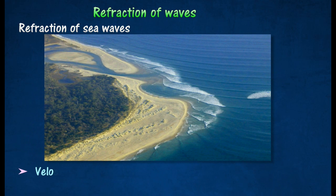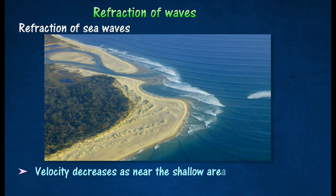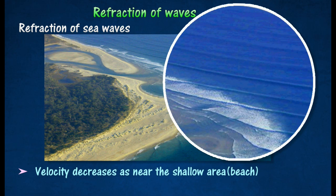For example, sea waves approach shallow water near the beach with decreasing velocity. This can be seen when the wave fronts become closer and closer.